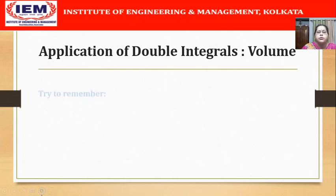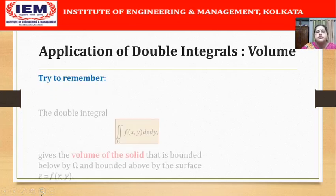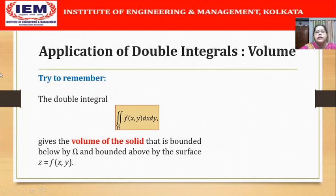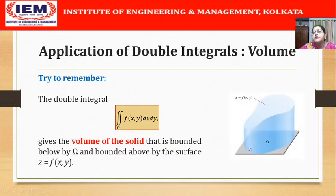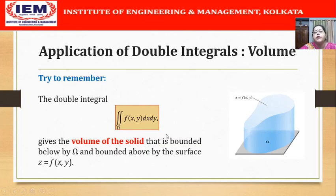So how can we do that? Let us remember that we have already seen that the double integral of f(x,y) dx dy over a region omega gives the volume of the solid that is bounded by the region of integration omega at the base and by the surface z = f(x,y) at the top. We will now use this concept to find the volume of regions in three-dimensional space.